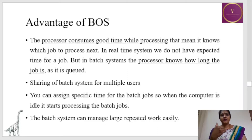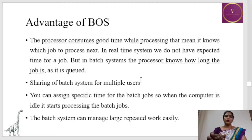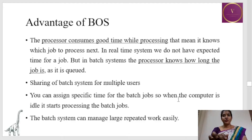Different jobs are grouped into batches covering all users — this is called sharing of the batch system for multiple users. It is not just one user; different sets of users with similar jobs are grouped into batches and the CPU is used for multiple users. You can assign specific time for each batch job, and when the computer is idle it starts processing the next batch. The batch system can manage large repetitive work very easily.